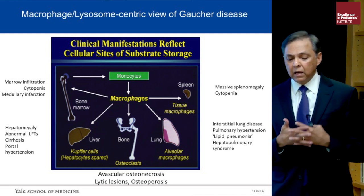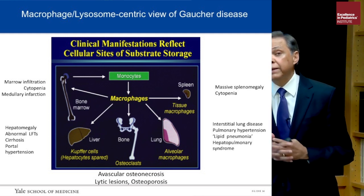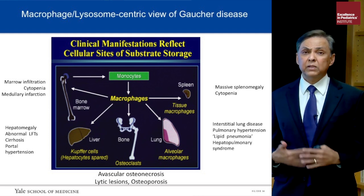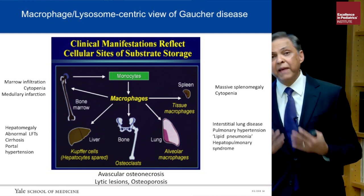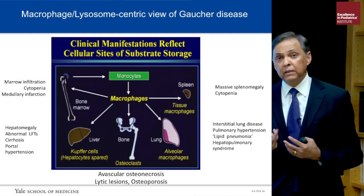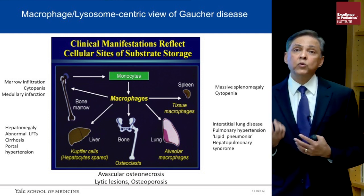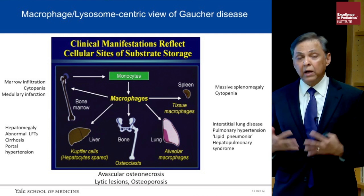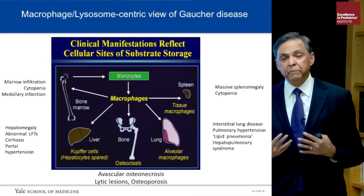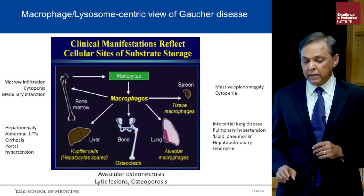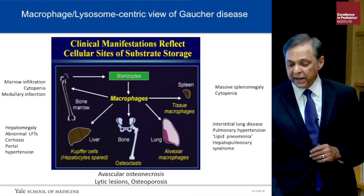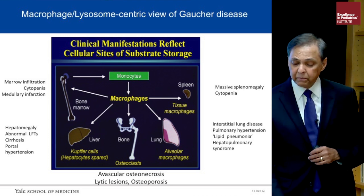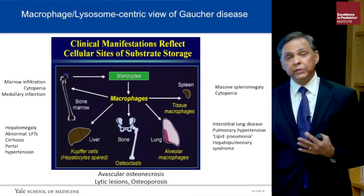We have had a very macrophage- and lysosome-centric view of Gaucher disease, which holds that lipid accumulates in macrophages. These macrophages are conspicuous and abnormal under light microscopy because cells are engorged with lysosomes containing this lipid. Wherever these macrophages build up you get disease manifestations — hence splenomegaly, lung infiltration, a wide spectrum of bone disease, hepatomegaly, marrow infiltration, and cytopenia.